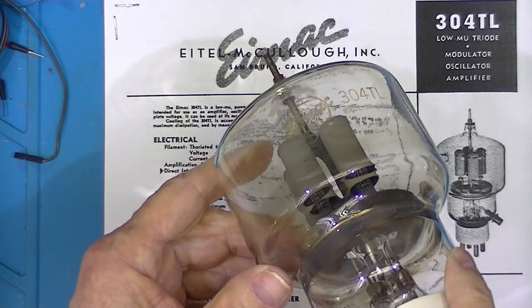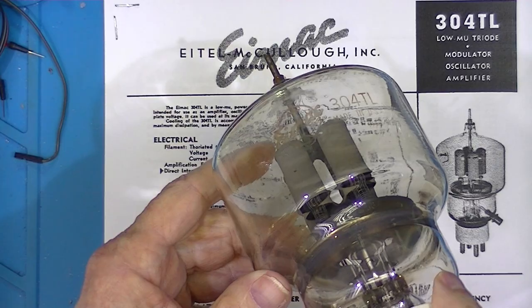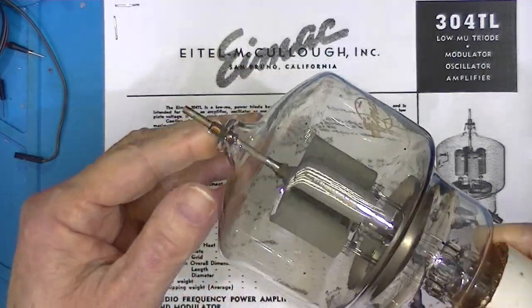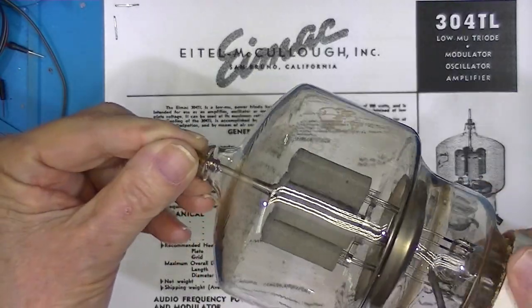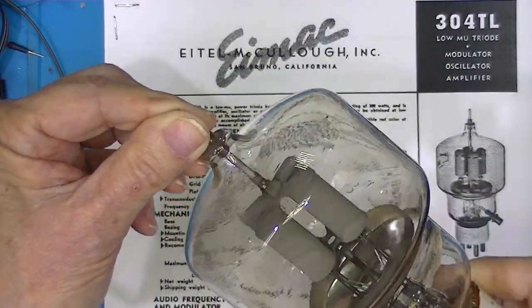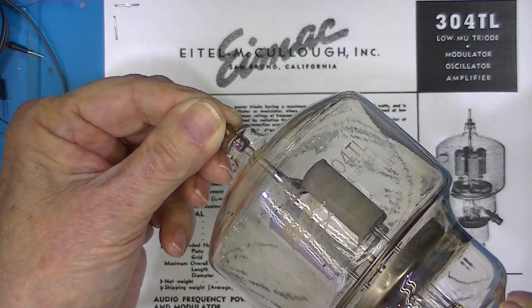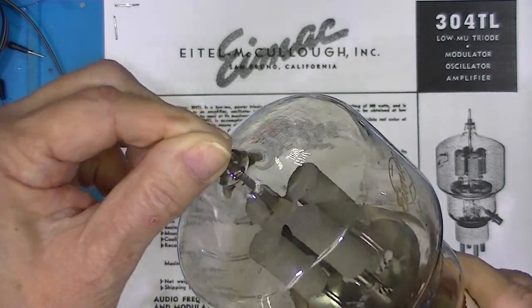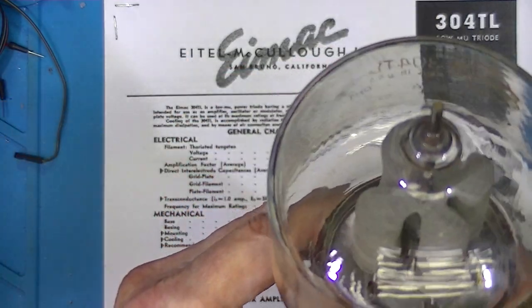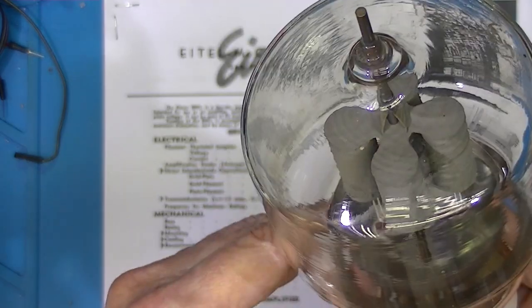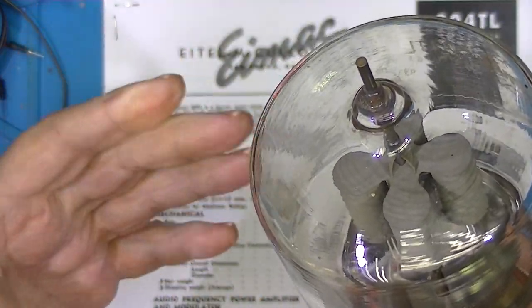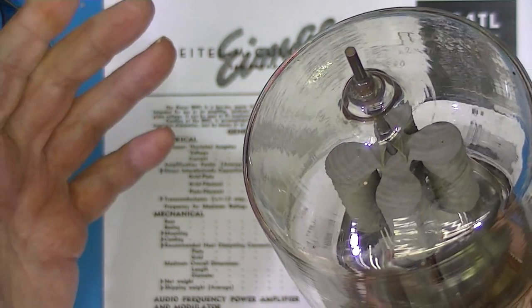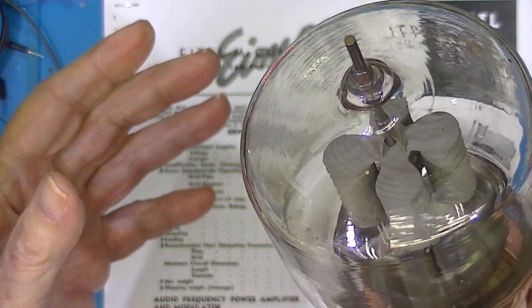This vacuum tube is a 304TL and has a maximum plate dissipation of 300 watts. The 304 supposedly comes from the 300, because there's four plates, four grids, and four filaments. There's no cathode - the filament is the cathode.